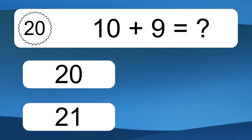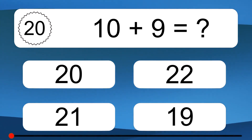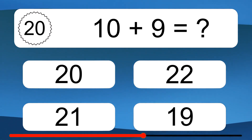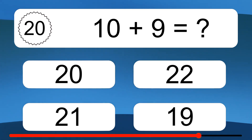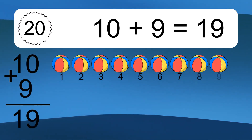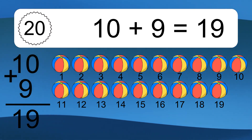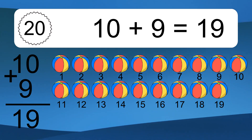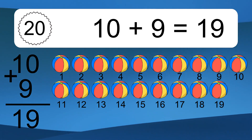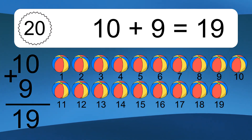10 plus 9 equals what? 10 plus 9 equals 19. Let's count it. 1, 2, 3, 4, 5, 6, 7, 8, 9, 10, 11, 12, 13, 14, 15, 16, 17, 18, 19.